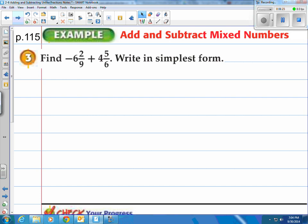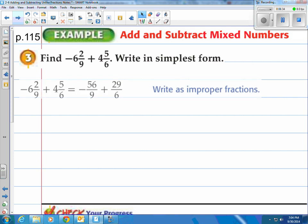How about adding and subtracting mixed numbers? This gets a little busier. So they say, find negative six and two-ninths plus four and five-sixths, and then write it in simplest form, which means reduce it. Well, step one, take these numbers and convert them into improper fractions. Nine times six plus two, that gives you the 56 over the nine. Put a negative on it. And the second one, six times four plus five is 29 over six.